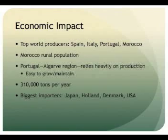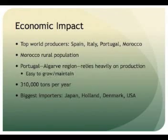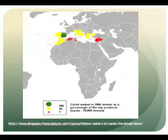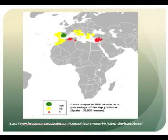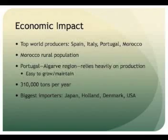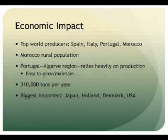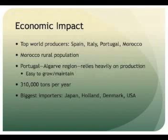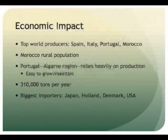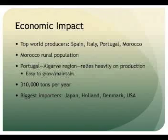As the top carob producers in the world, Spain, Italy, and Portugal rely most heavily on the tree for economic contribution. As the fourth largest producer in the world, Morocco also relies on carob cultivation. Among Morocco's rural population, there is possibly the highest reliance on the carob crop out of anywhere else in the world. Portugal, another smaller country, also has significant reliance on carob production. The arid Algarve region of the country is highly active in carob exportation. 310,000 tons of carob are produced each year, a majority of which is imported by Japan, Holland, Denmark, and the U.S.